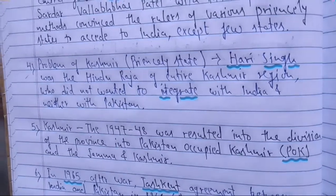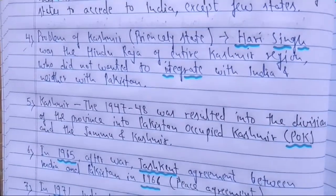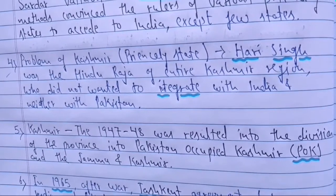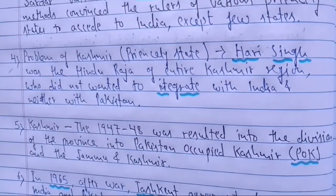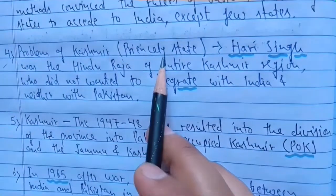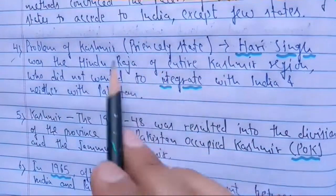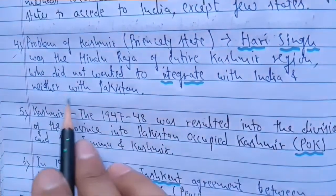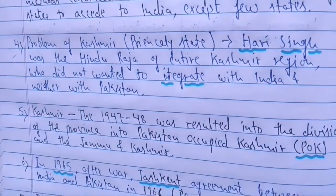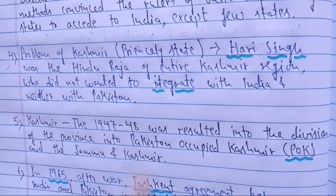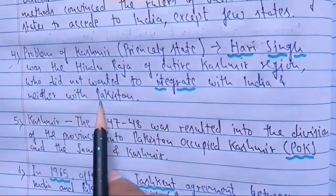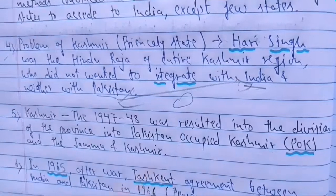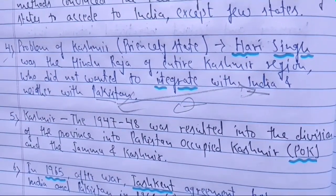After independence, Kashmir was a princely state under British rule. All princely states were given the option to remain aloof or merge with the central government. The king of this princely state was Hari Singh, a Hindu Raja of the entire Kashmir region, who did not want to integrate with either India or Pakistan. Most of the population of Kashmir was Muslim, but he wanted a separate independent nation.